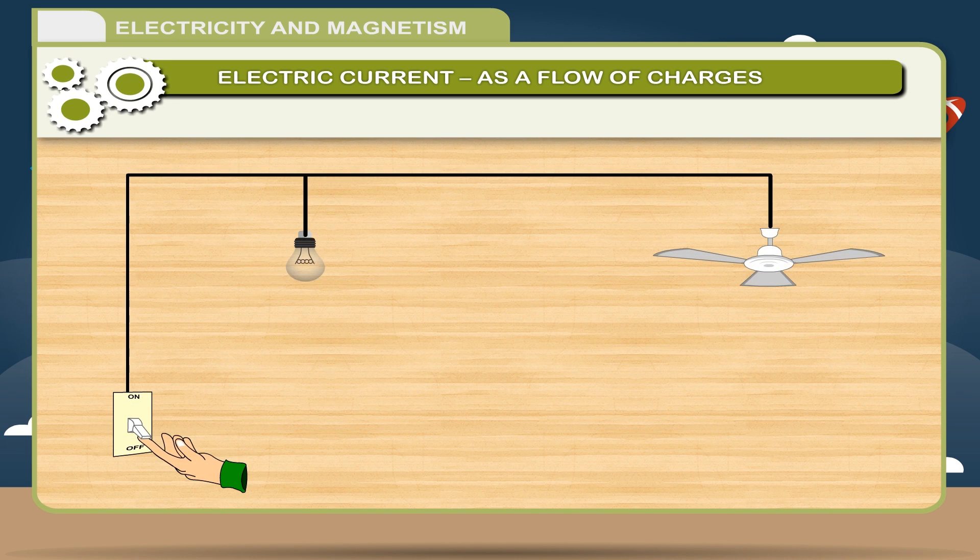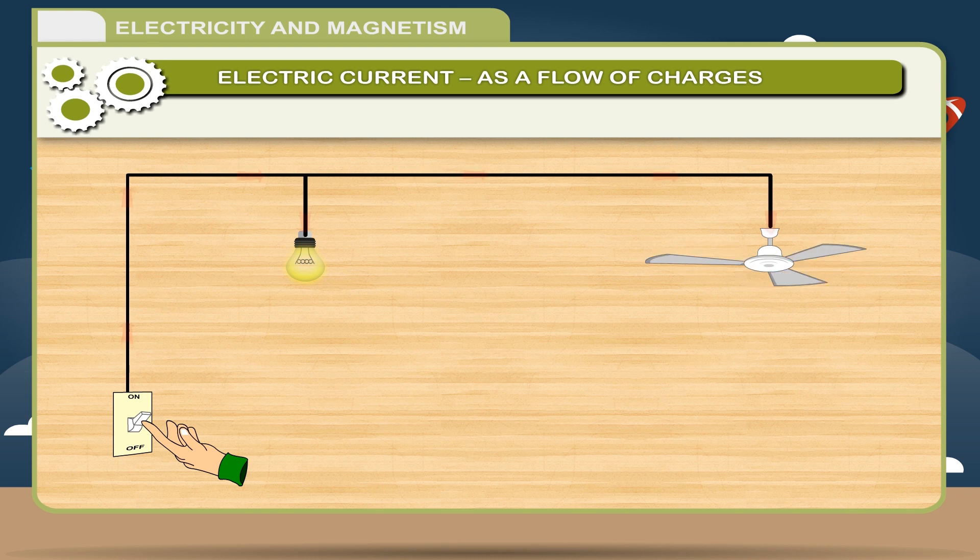That means when we switch on the bulb or fan, the electricity flowing through the wires is actually the flow of electrons. This flow of electrons, electric charges through a conductor, is known as an electric current.